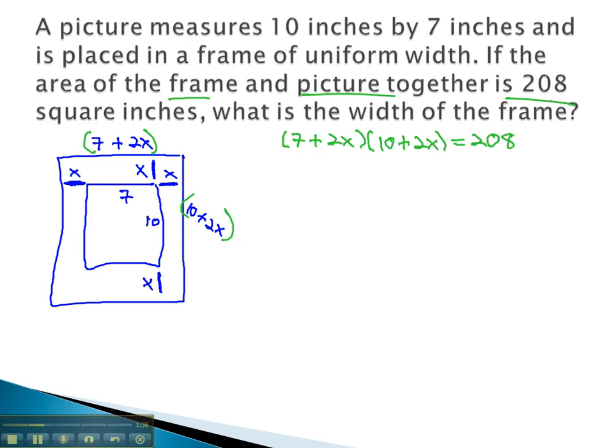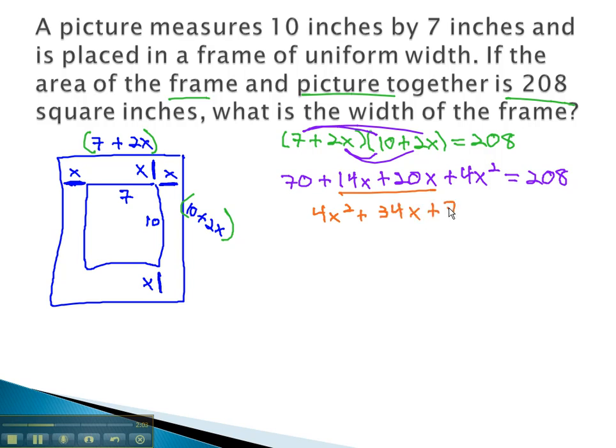We can start solving this equation by multiplying it using FOIL to get 70 plus 14x plus 20x plus 4x squared equals 208. Combining like terms and putting things in order gives us 4x squared plus 34x plus 70 equals 208.